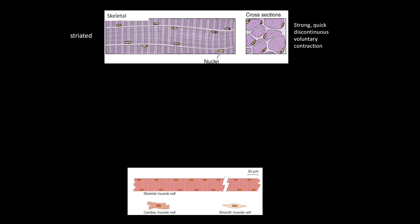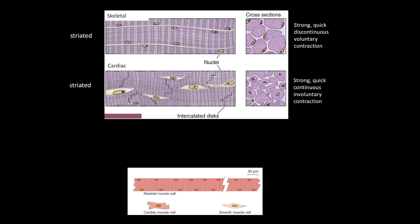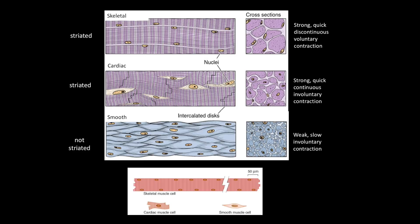Skeletal muscle has strong, quick contractions, and these contractions are voluntary, so the organization of this muscle type reflects those functional requirements. Similarly, cardiac muscle has strong, quick contractions, but these are continuous and involuntary. Smooth muscle contractions are much weaker and much slower; like cardiac tissue, these contractions are involuntary, but the control is different. Skeletal muscle cells are much larger than the other two types.